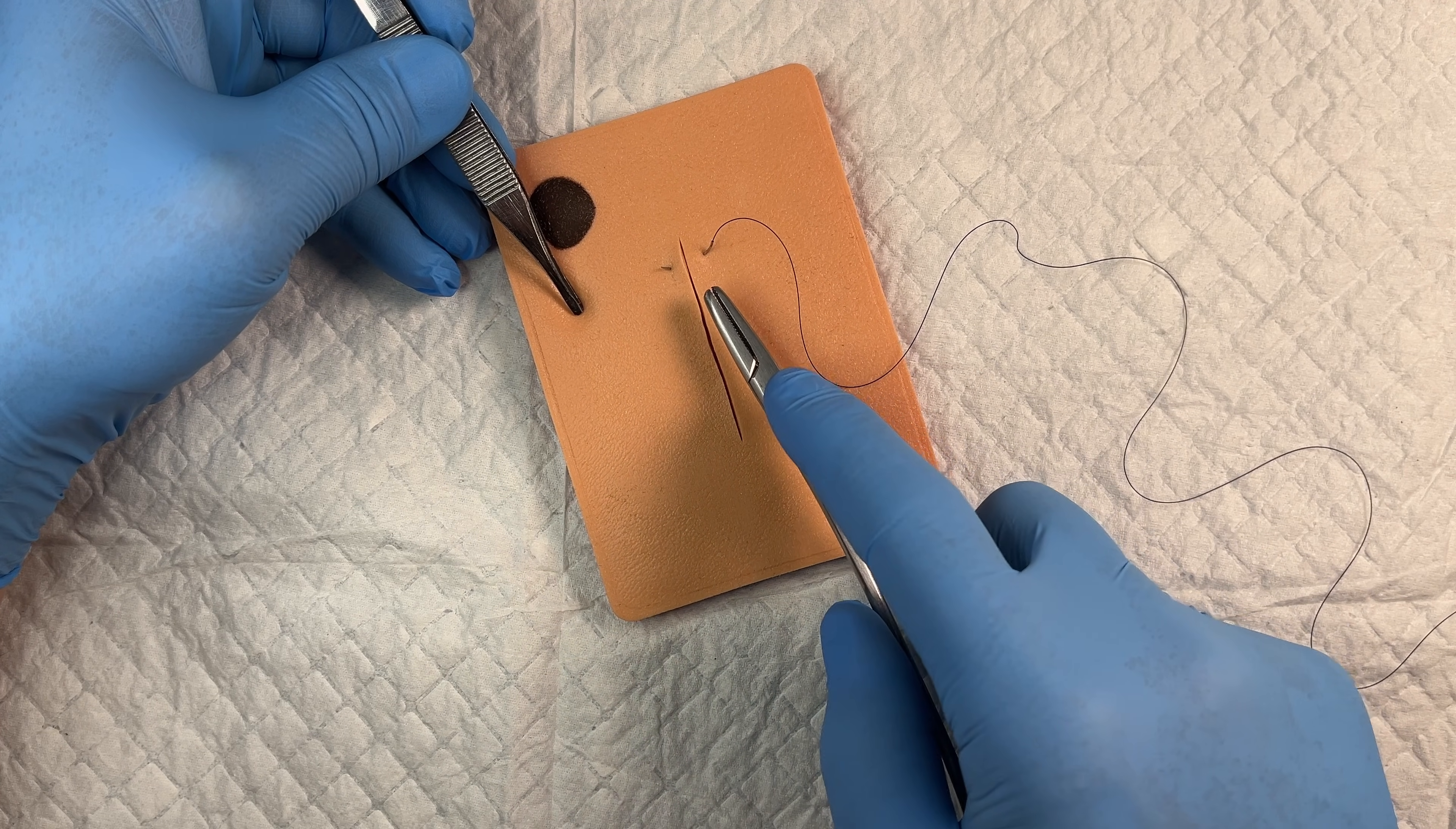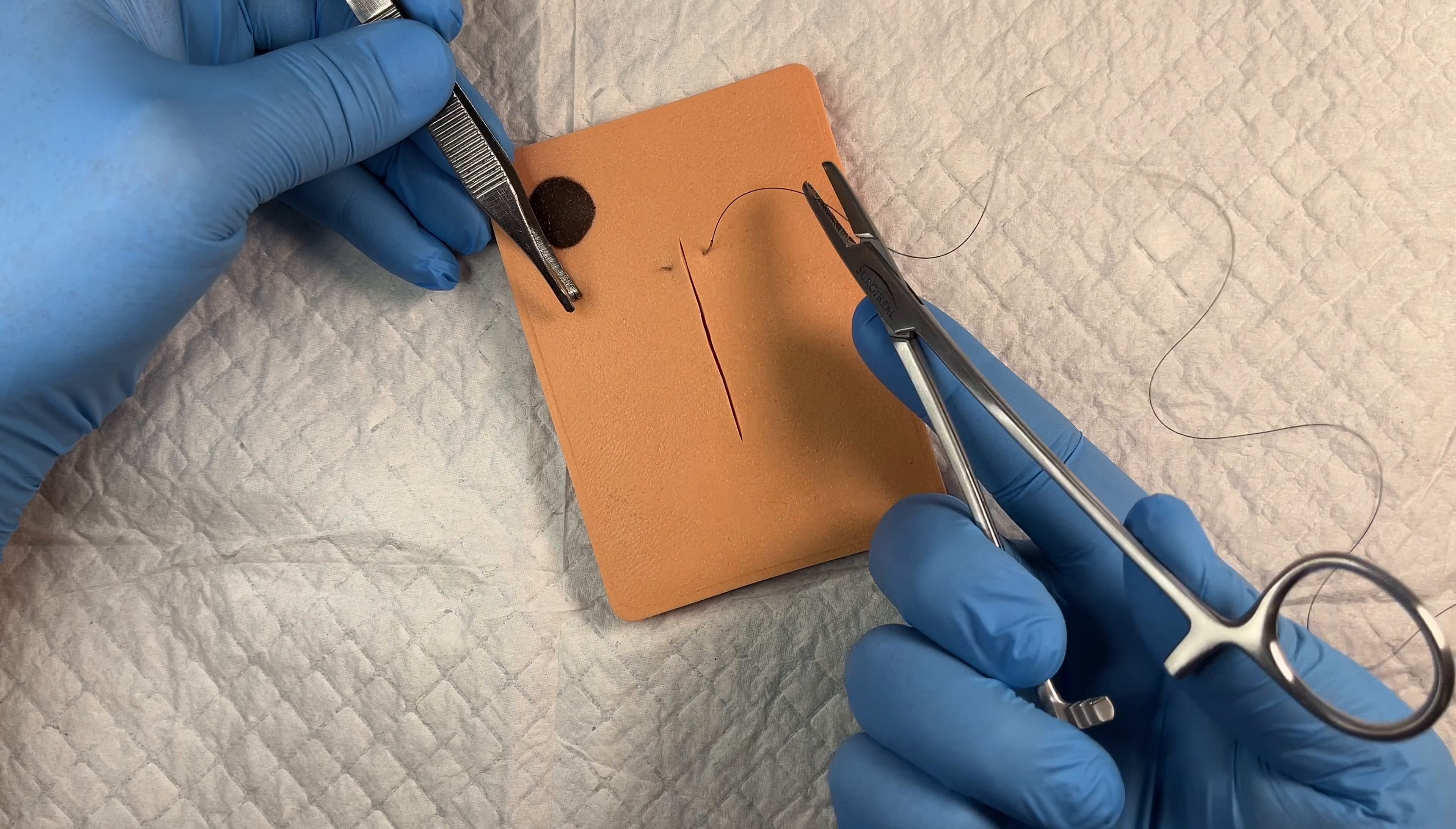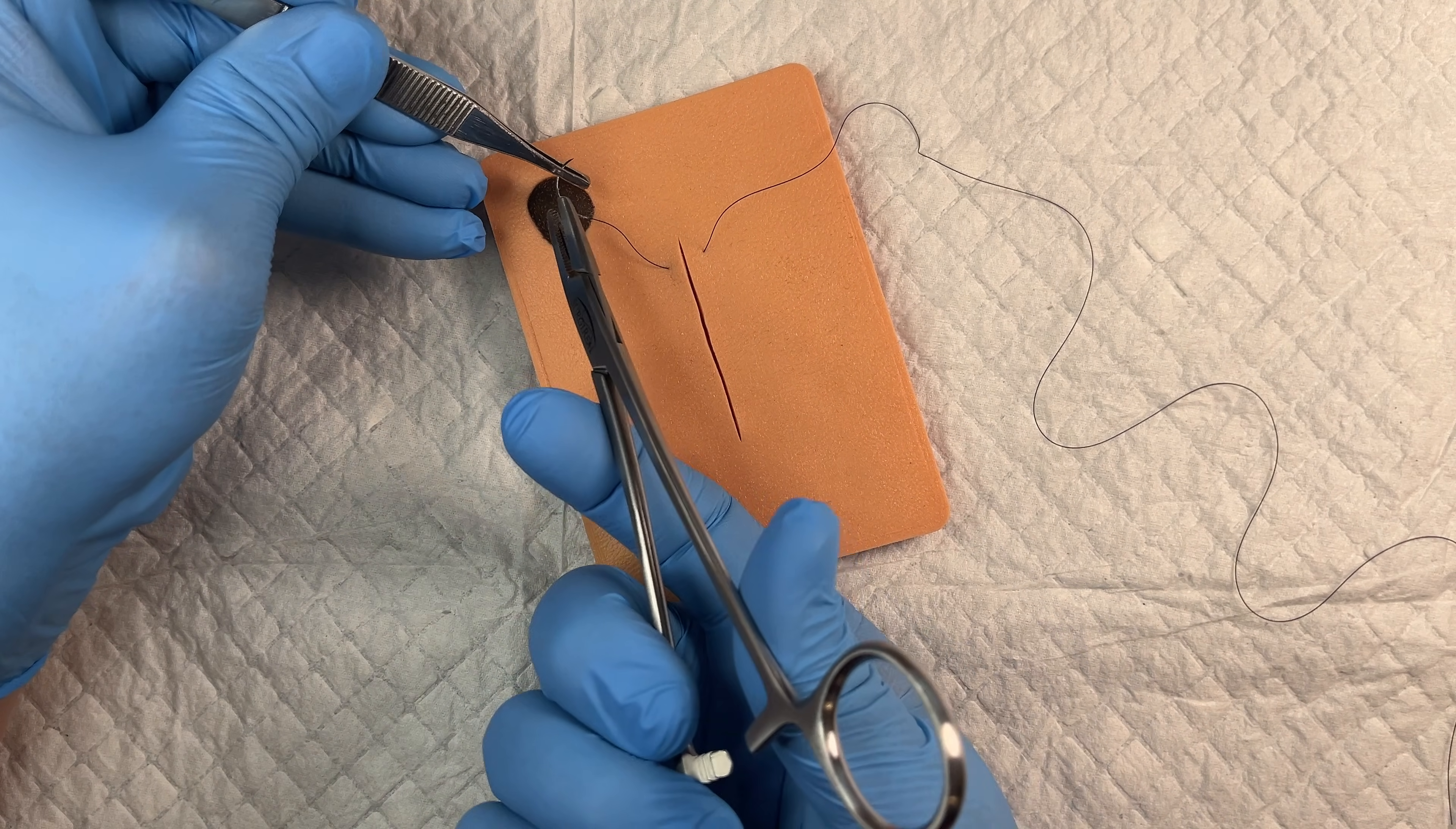And then using that thenar eminence to open and close this, or using my thumb to open and close it, I can simply just grab a hold of that needle and move this around in a way that allows me to keep my fingers outside of that eye ring and be ready for the next suture.